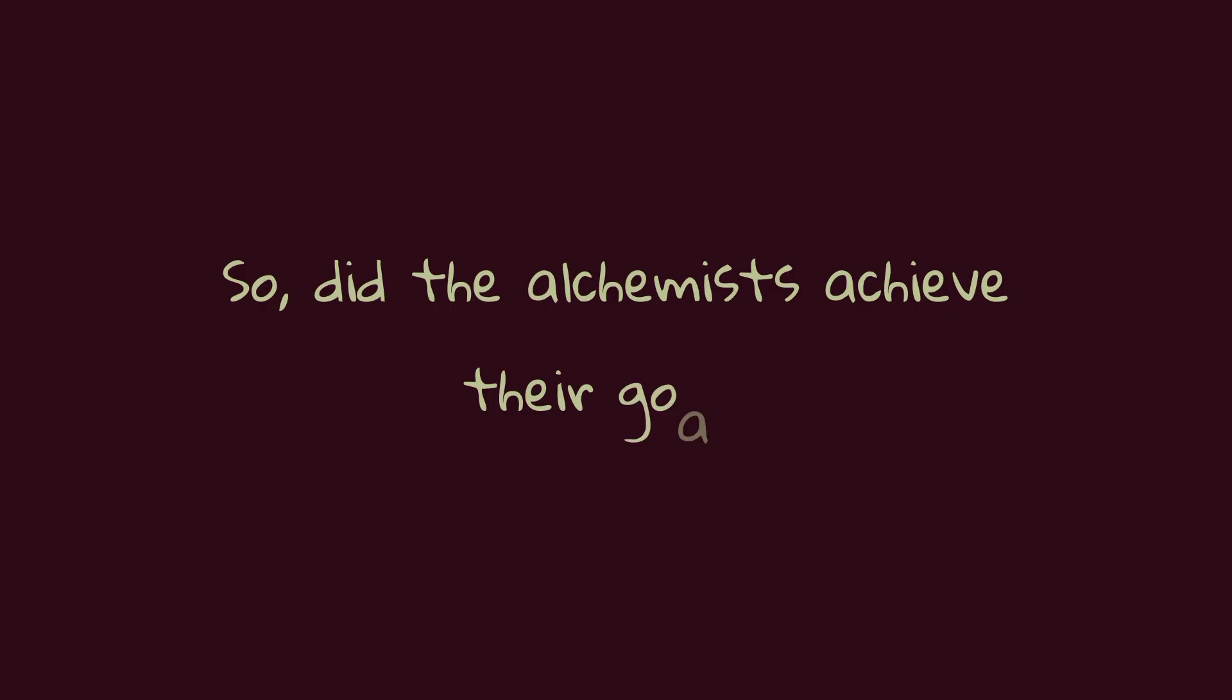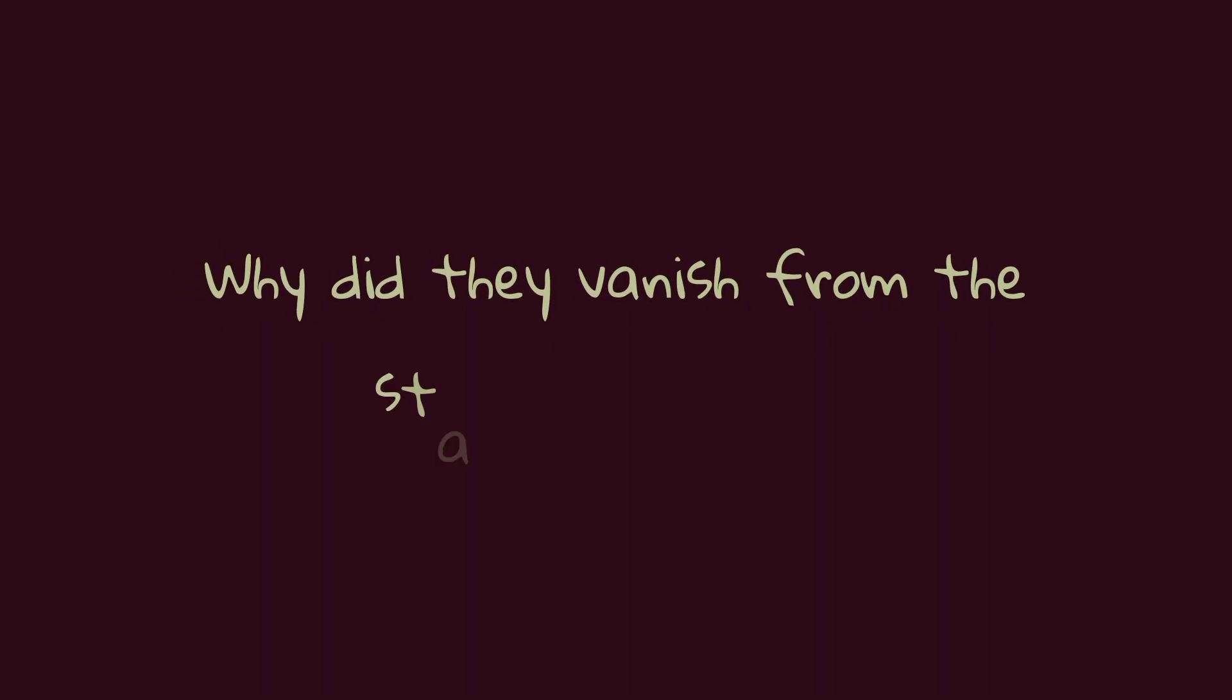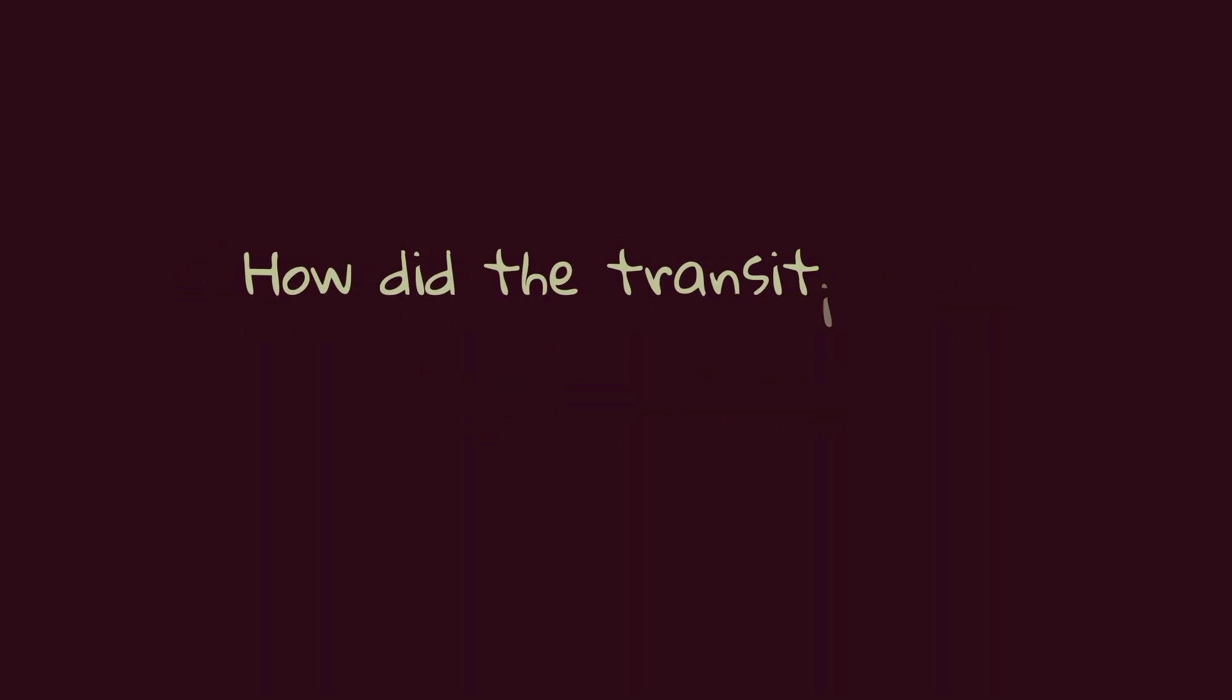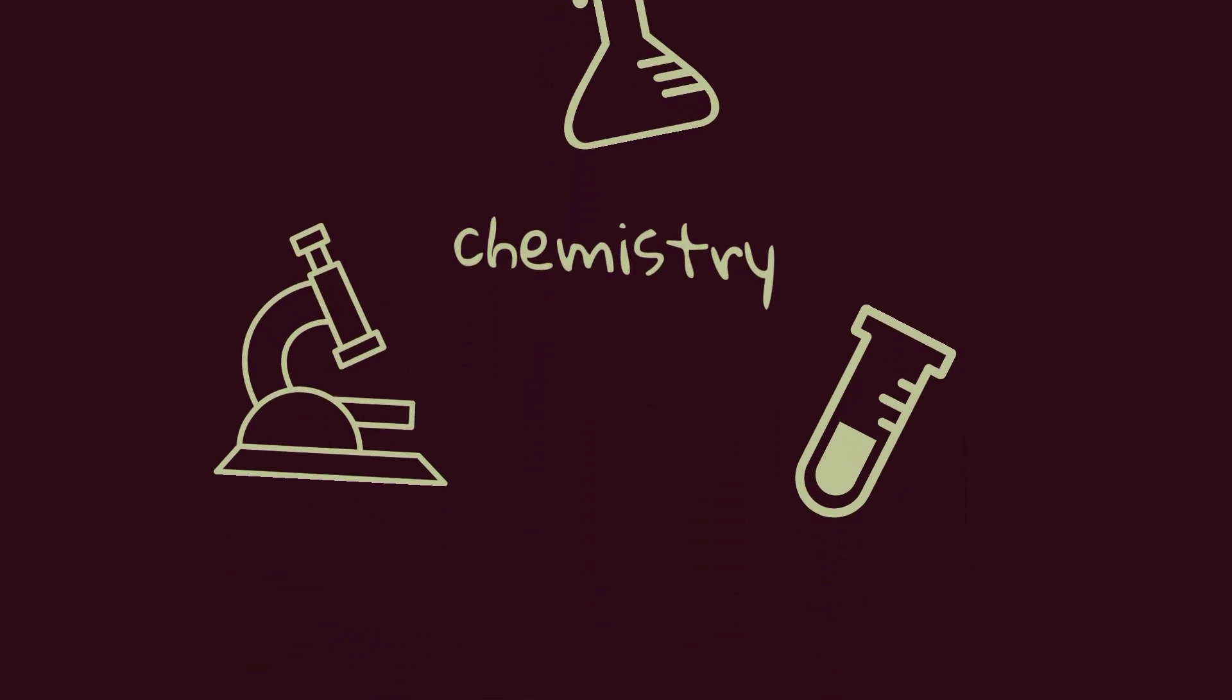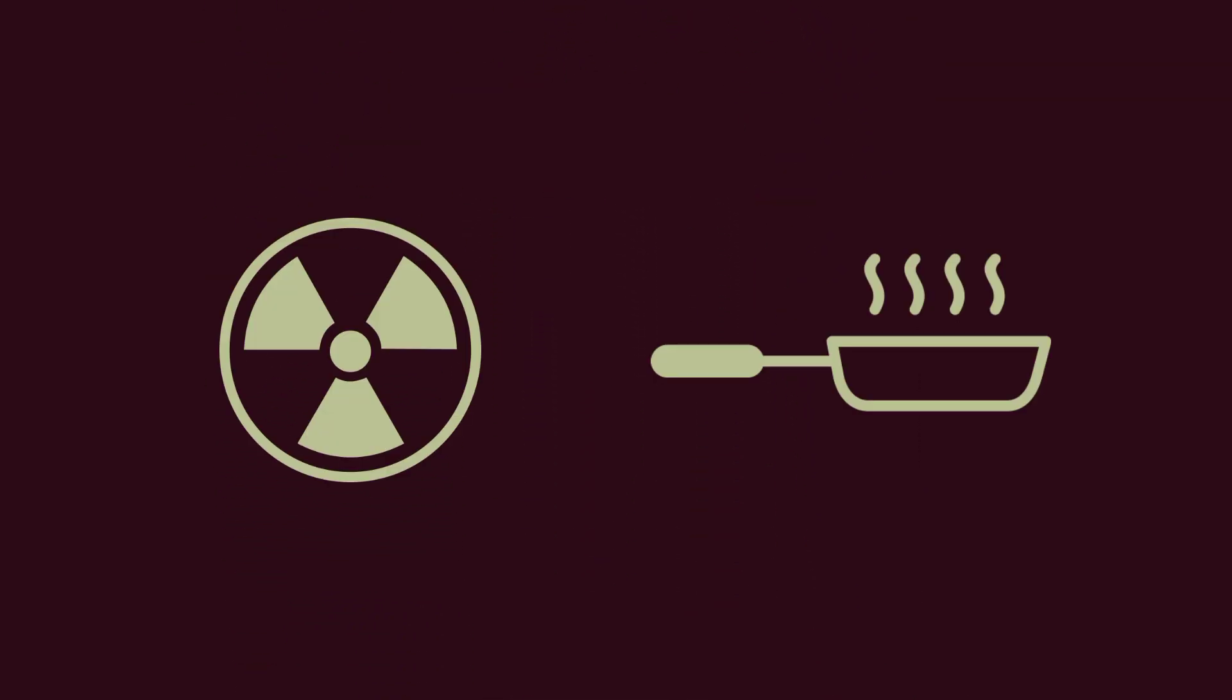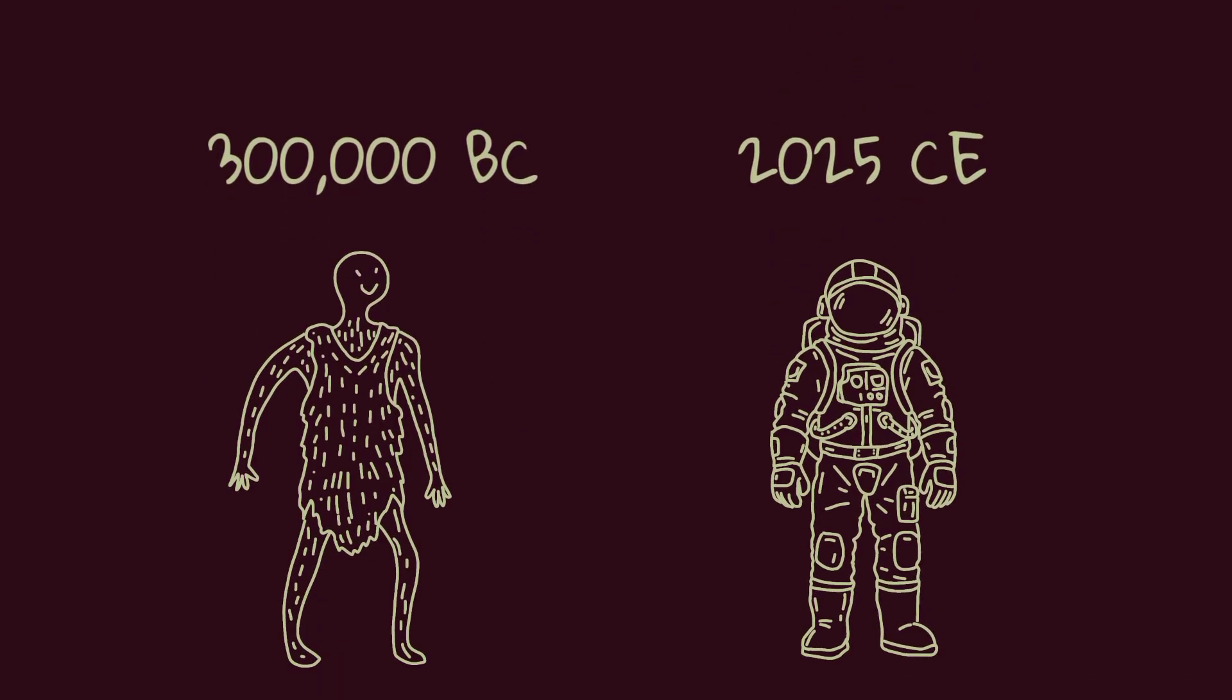So did the alchemists achieve their goals? Why did they vanish from the stage of history? How did the transition to scientific chemistry happen? How did the science of chemistry, which stretches from nuclear energy to the pans we use in our kitchens, evolve?